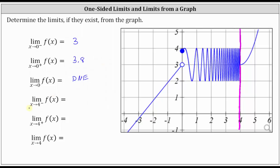We have the limit of f of x as x approaches four from the negative side or left side, which means we are approaching x equals four from this direction. Notice as we approach x equals four from the left or negative side, the function values oscillate or bounce back and forth between positive two and positive four. Because we are not approaching one specific function value as we approach four from the left, this limit does not exist.